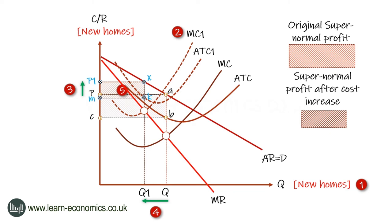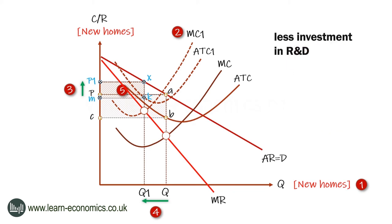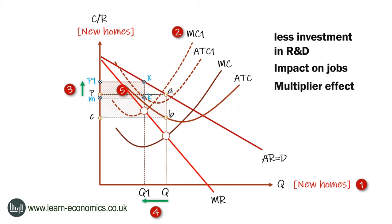This may reduce funds for R&D and investment in new technology, such as technology used in house design and construction. There are clearly other implications of the cost increase, including the impact on jobs. The reduction in house building may put bricklayers and other workers out of work. The multiplier effect may amplify this.